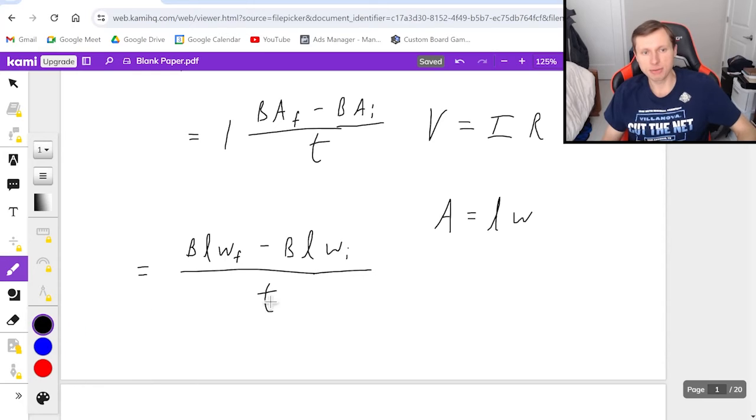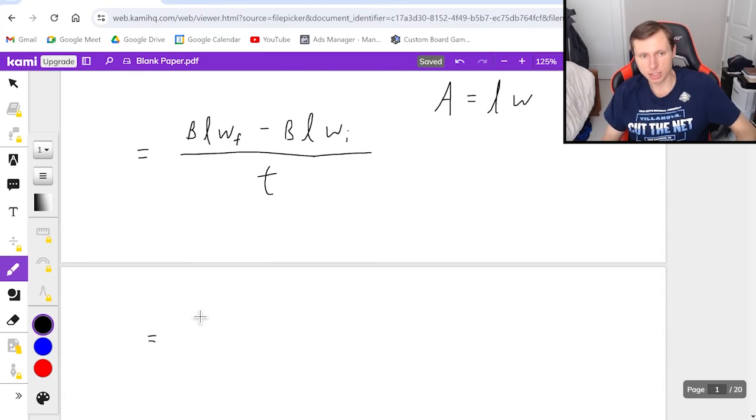what you're going to see me do is you're going to see me factor out the things that don't change, B and W, magnetic field and width, leaving me with L final minus L initial, still divided by time.